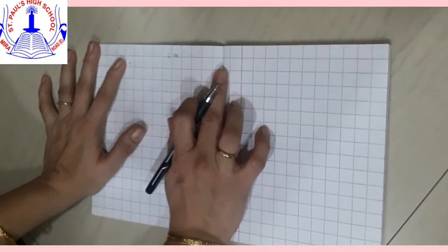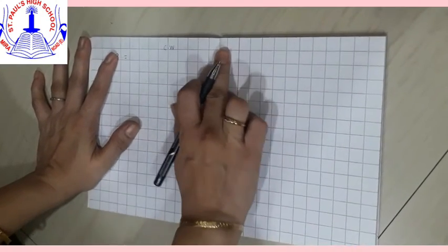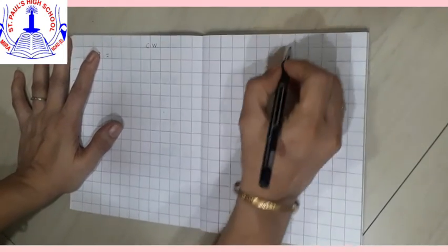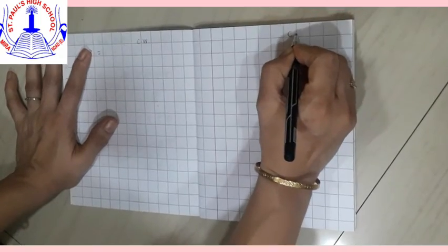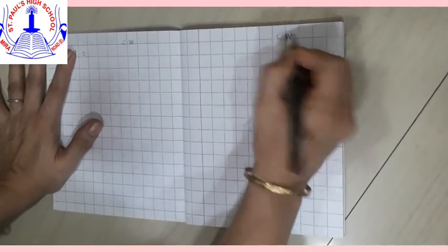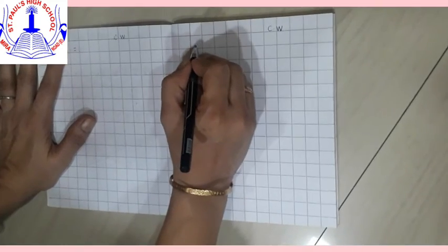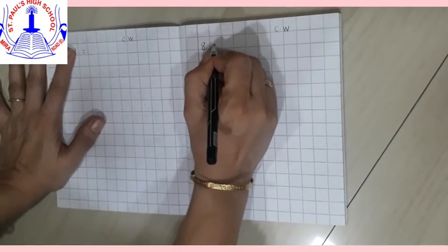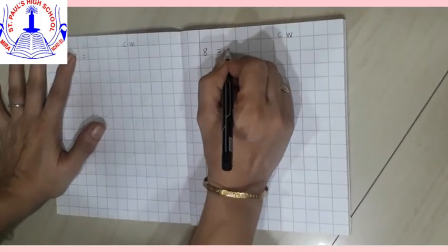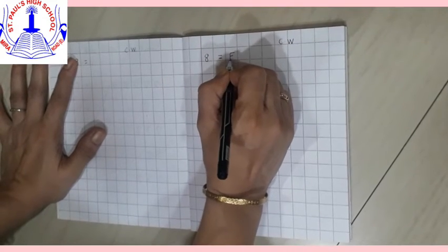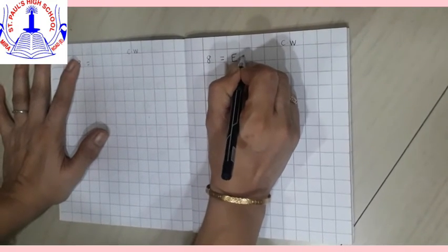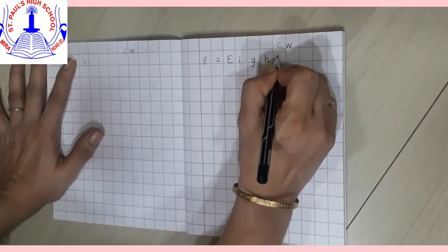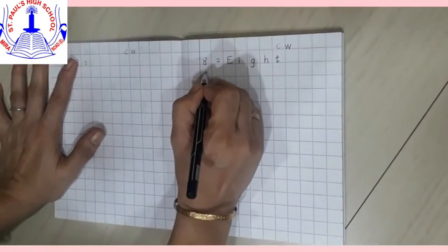So children, what is the first thing we are going to do? We are going to write date and you must always write date inside the margin. Now write here C.W. Now we are going to write spelling of 8. 8 put equal sign E-I-G-H-T. 8.